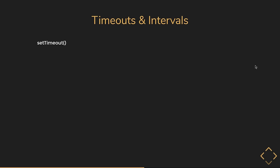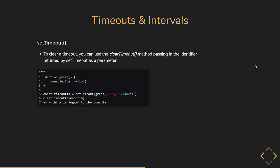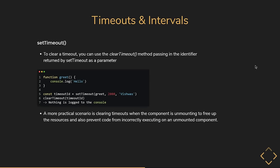Once a setTimeout has been called, you might want to cancel it. To clear a timeout, use the clearTimeout method passing in the identifier returned by setTimeout as a parameter. In the code snippet, on line 5 we assign the return value from setTimeout to a constant called timeoutId. On line 6, we pass that id into clearTimeout, which ensures our greet function will not run after the two-second duration. A more practical scenario is clearing timeouts when a component is unmounting to free up resources and prevent code from incorrectly executing on an unmounted component.